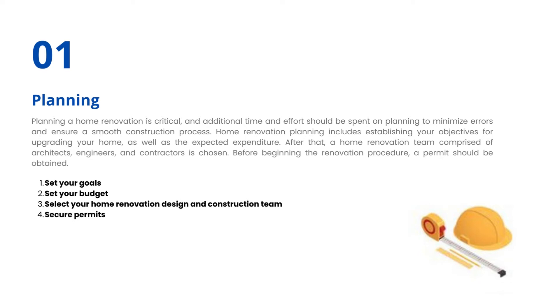Home renovation planning checklist: Number 1 — Set your goals. Number 2 — Set your budget. Number 3 — Select your home renovation design and construction team. Number 4 — Secure permits.